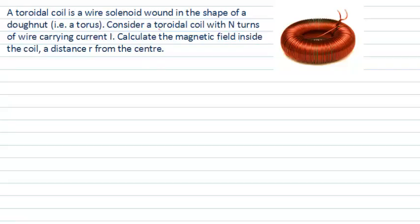And this question is asking us for a particular arrangement here with capital N turns of wire around our coil, the wire carrying a current of I, to find the magnetic field inside the coil at some location from the centre of this torus.